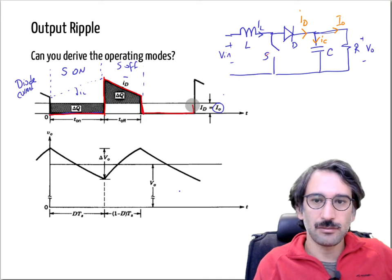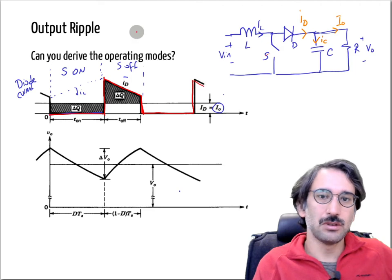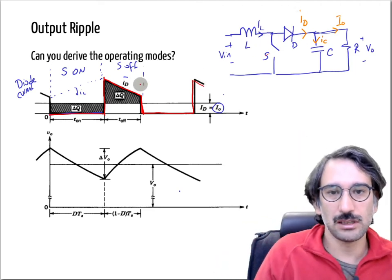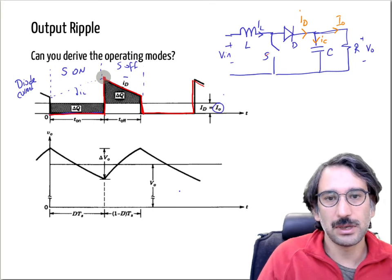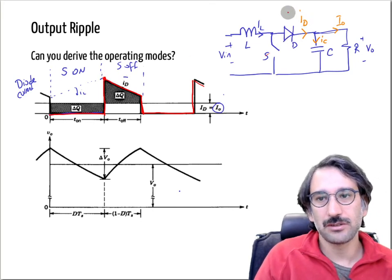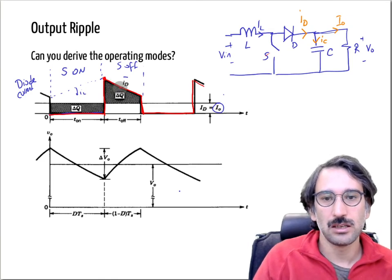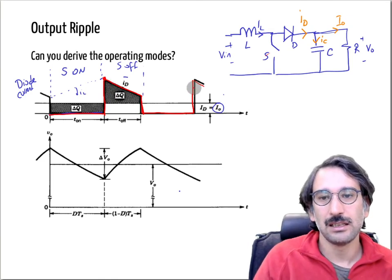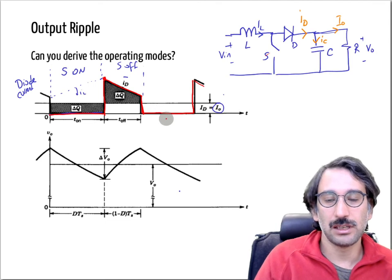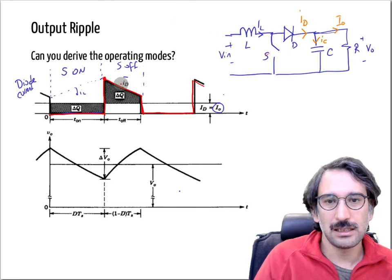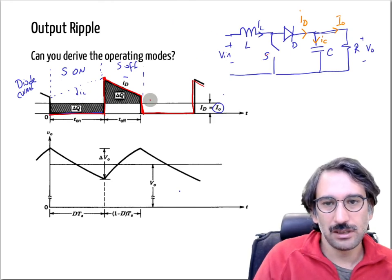If you are choosing a diode, you need to consider the maximum current and, to calculate conduction losses, you need the RMS value to find average heat dissipated. For this analysis, the important thing is: whenever the diode current is larger than the output current, we are charging the capacitor.